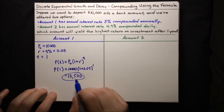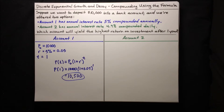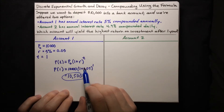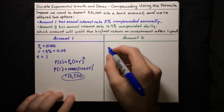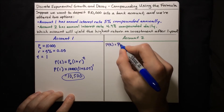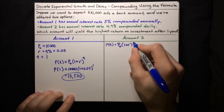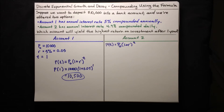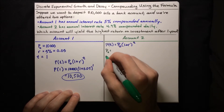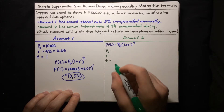If you push that in on your calculator, you'll find the result is $10,500. So that's how much money is in account 1 after one year. Now account 2 is pretty similar. P of T is equal to P0 times (1 plus R) to the power of T. Let's collect our information: what is P0, what is R, and what is T for account 2.